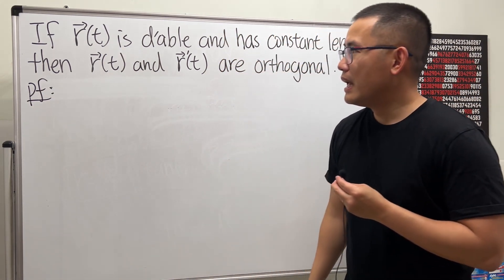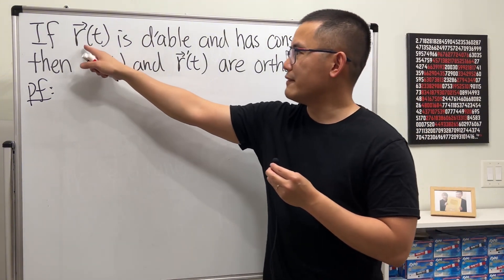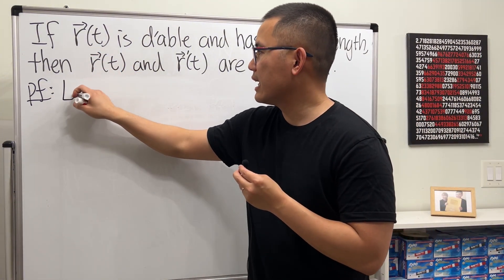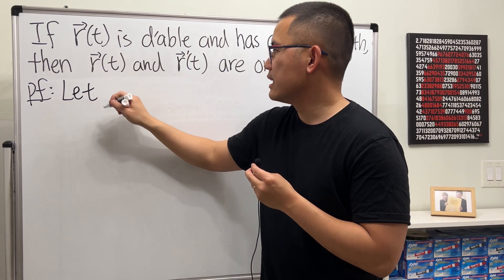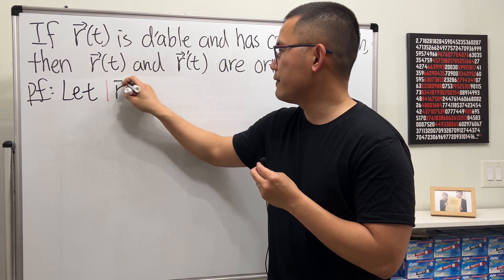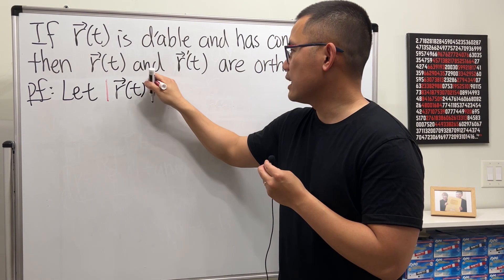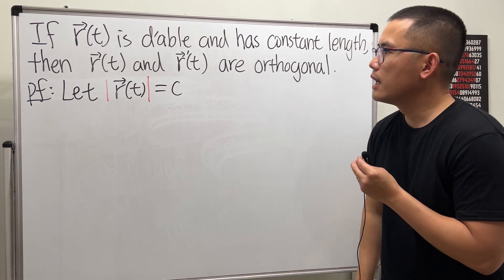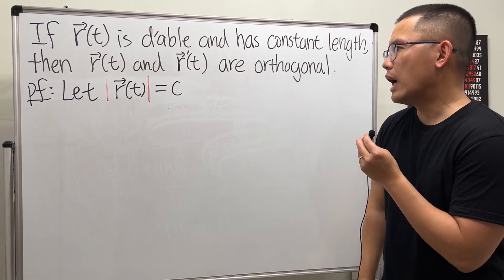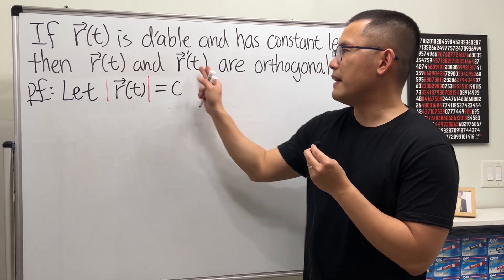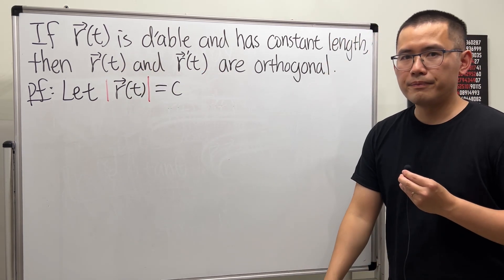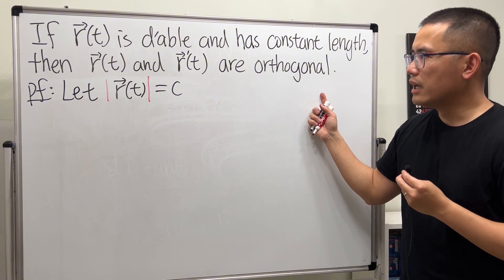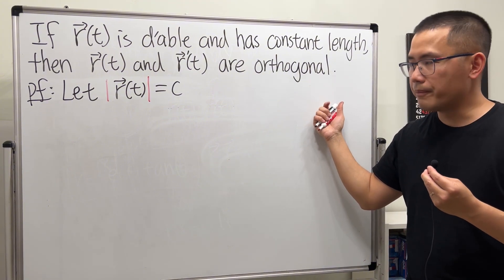Let's assume that we have a vector function that has constant length. Let the length of our vector function be some constant number c. Now, to show that two vectors are orthogonal, one of the best ways is to consider the dot product and show that it's equal to zero.